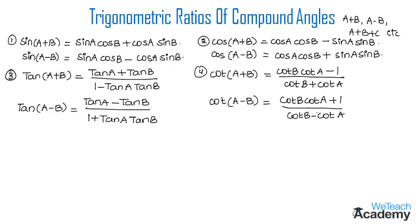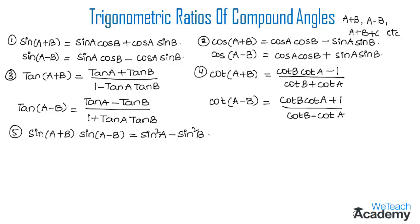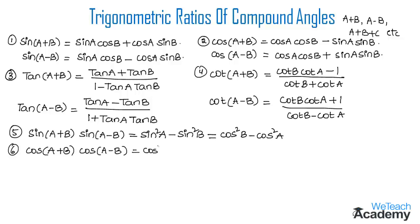These are the formulas for compound angle A plus B under different Trigonometric Ratios. Now let us write the formulas for compound angles (A+B)(A−B) under the Trigonometric Ratio sin. sin(A+B) sin(A−B) is equal to sin²A minus sin²B, which is also equal to cos²B minus cos²A. Under cosine: cos(A+B) cos(A−B) is equal to cos²A minus sin²B, which is also equal to cos²B minus sin²A.